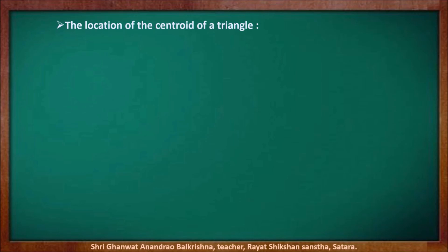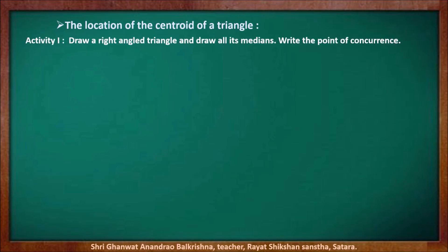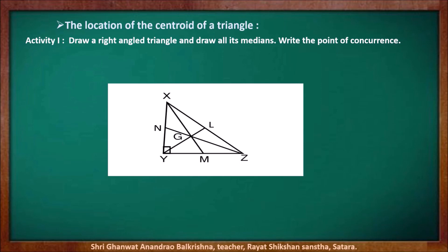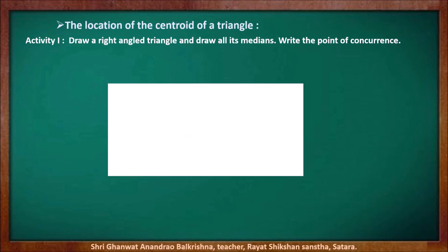Now let us find the location of the centroid of a triangle. For that activity, first draw a right-angled triangle and draw its all medians. Note the point of concurrence. We have drawn here right-angled triangle XYZ, and segments XM, YL, and ZN are the three medians of that triangle. G is the point of intersection, and we found that the point of intersection is in the interior of that triangle.